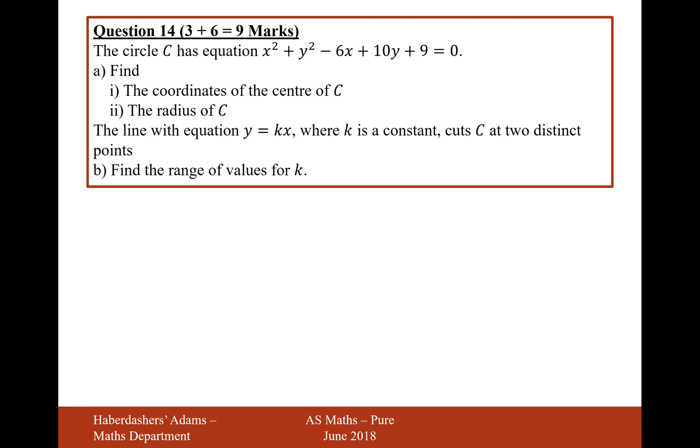Let's now move on to part B. Let's just make a record of that equation there: x minus 3 squared plus y plus 5 squared equals 25. The line with equation y equals kx, where k is a constant, cuts C at two distinct points. Find the range of value for k.